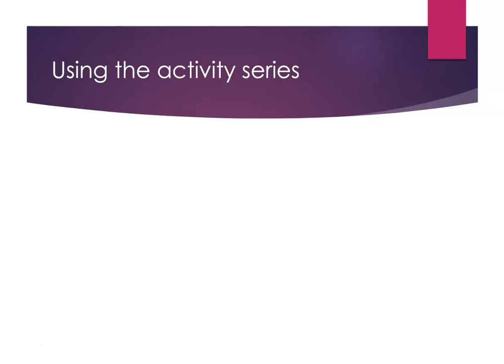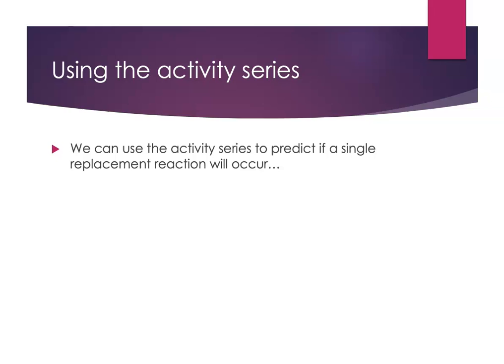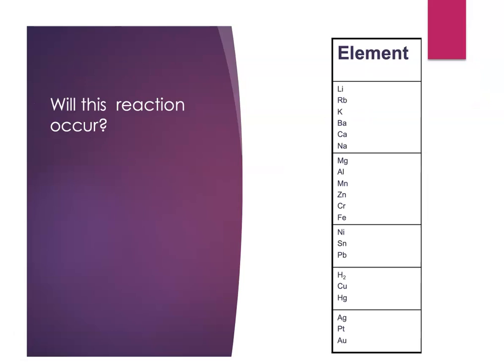As chemistry students, the activity series is really helpful because we can use it to predict if a single replacement reaction will occur or not. Again, just because I can write a balanced equation doesn't mean it actually happens. So here's the pattern. An element can replace a less active element in a compound. So with the activity series of metals, a metal can replace a less reactive metal. In contrast, an element cannot replace a more active element in a compound.